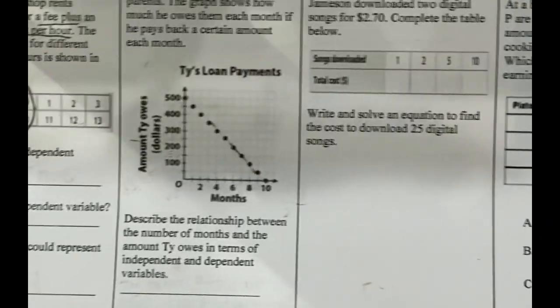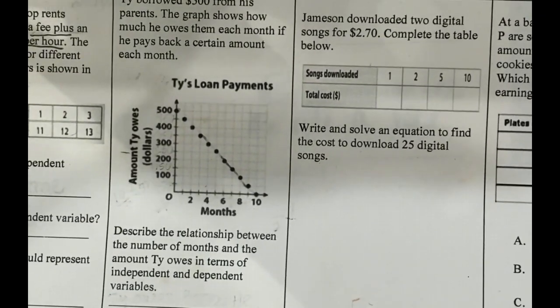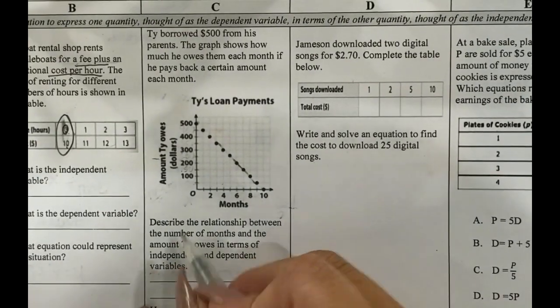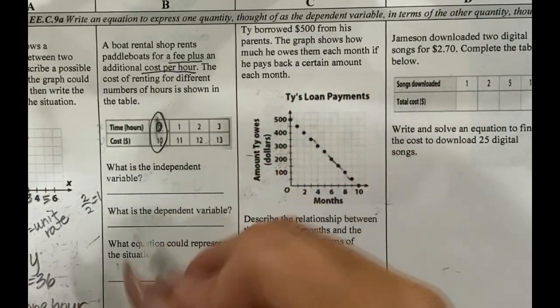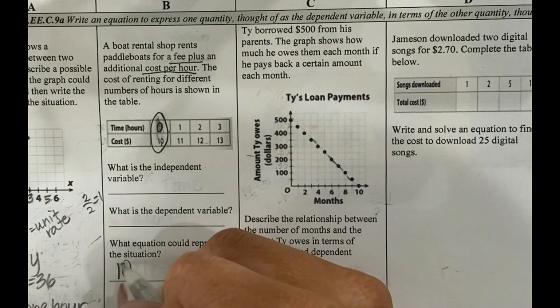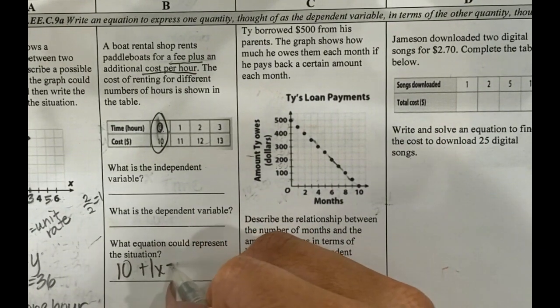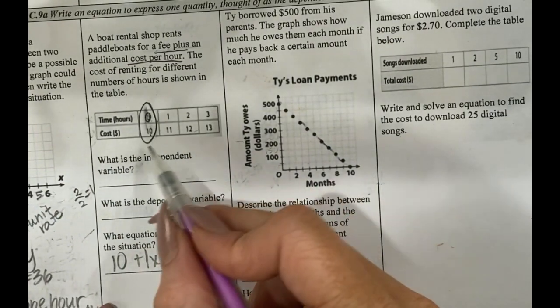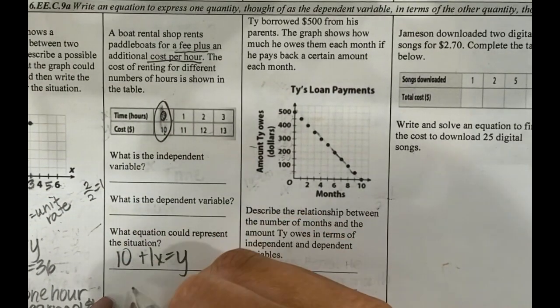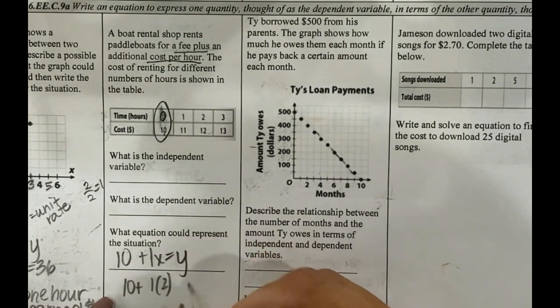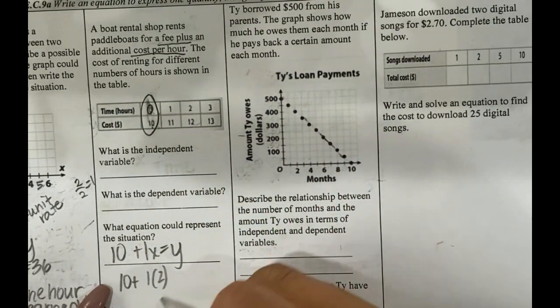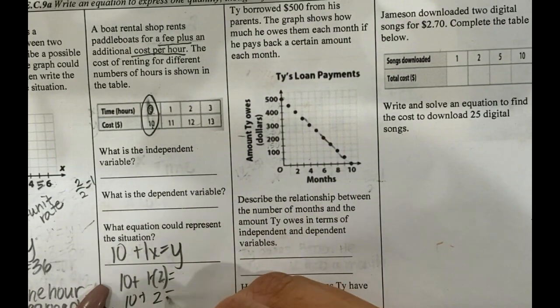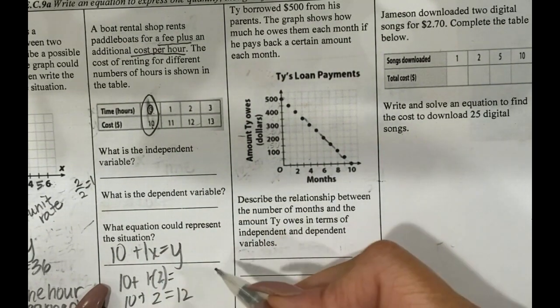So in this situation, my equation would be 10 plus one X equals Y. So X being the number of hours. So let's make sure that's true. So if I was at the boat rental for two hours, that would give me two plus 10, and that would be 12. So that is correct.